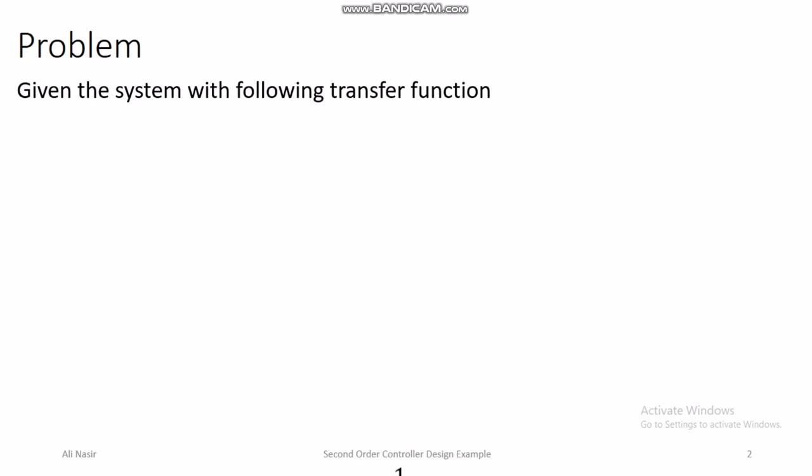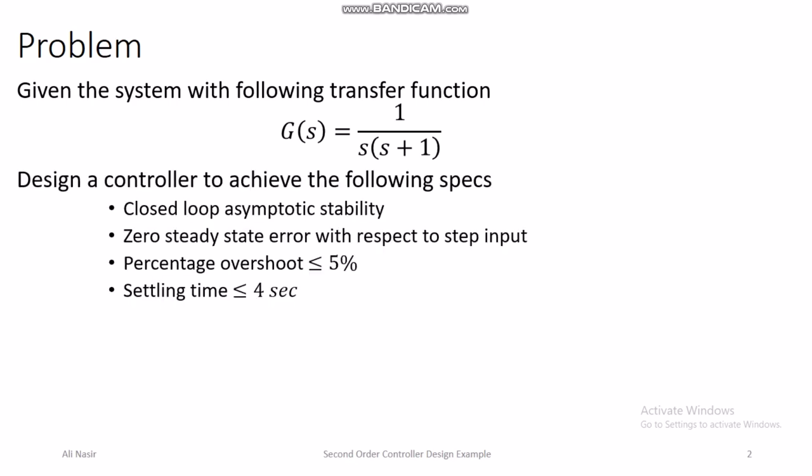We will see how we can use the transient specification formulas for designing a controller for a second order system that achieves desirable specifications. The system we are discussing has the transfer function G(s) = 1 / [s(s+1)], which has two poles — one at zero and one at minus one. We have to design a controller to achieve four specifications.